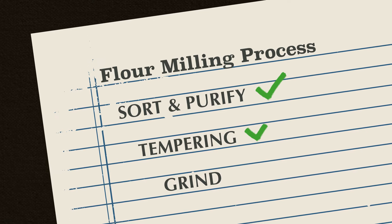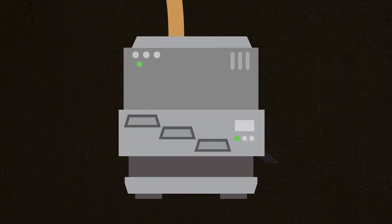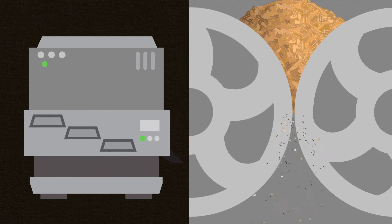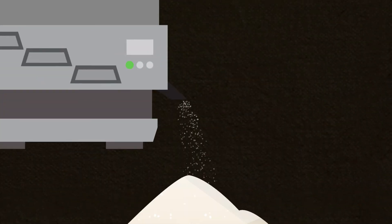After the wheat kernels are sorted, purified, and tempered, they are then fed into rollers and sifters. These machines meticulously split and grind the kernels, reducing them into a fine powder.